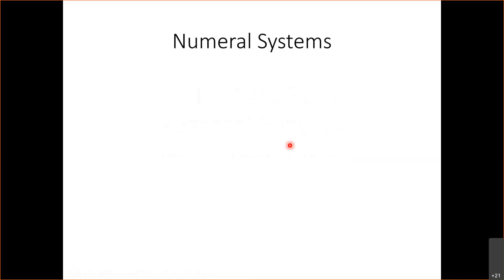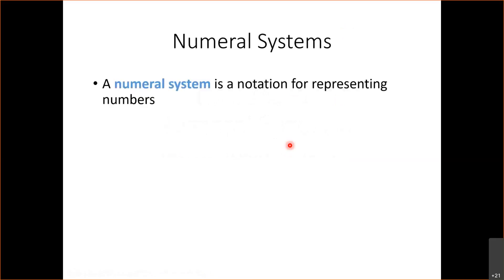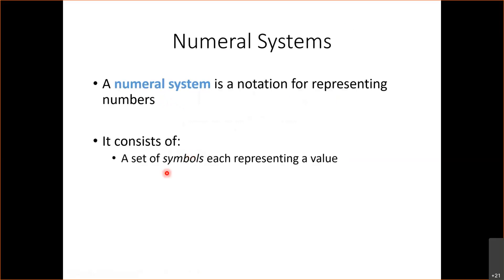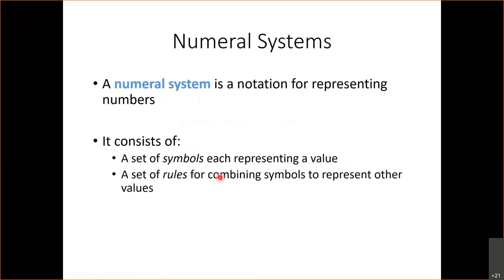To start, I'd like to introduce what a numeral system is. A numeral system is essentially a notation for representing numbers, and it consists of two parts: a set of symbols where each symbol represents a value, and a set of rules for combining these symbols together to represent other values that individual symbols don't represent.